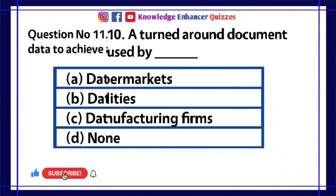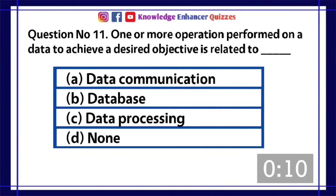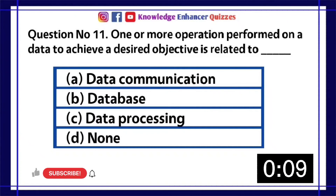Question number 11. One or more operations performed on data to achieve a desired objective is related to dash? A. Data communication. B. Database. C. Data processing. D. None.